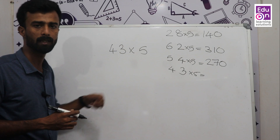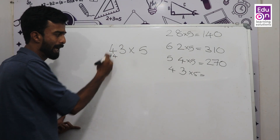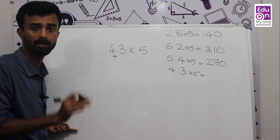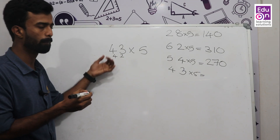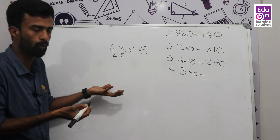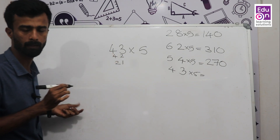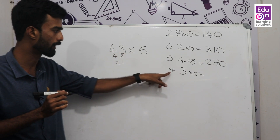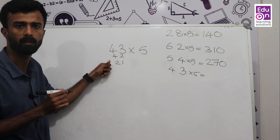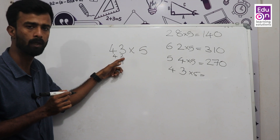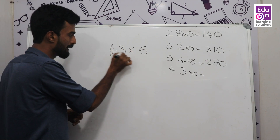For 43 × 5, this gives a point result. 42 × 5 = 21 × 10 = 210. We take the closest even number to the left, which is 42. For 43, look at 42, and the answer for 43 × 5 is 215.